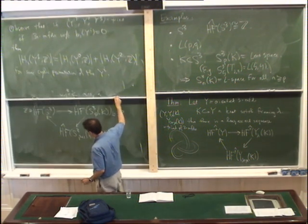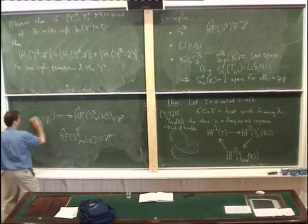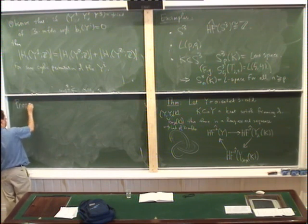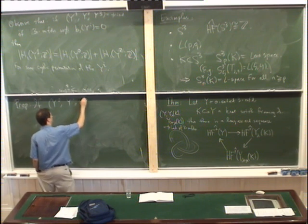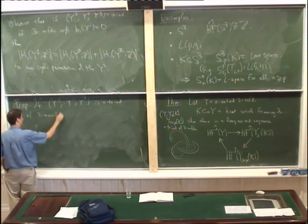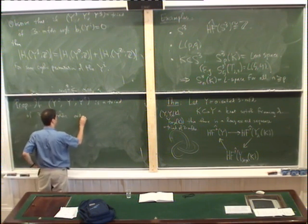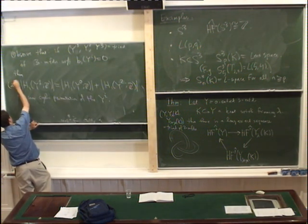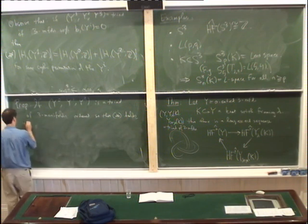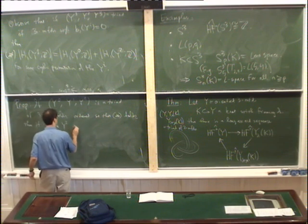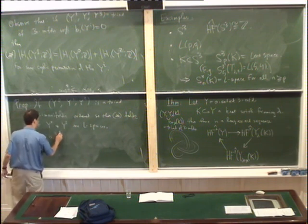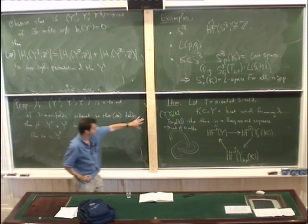To formalize: let me make the following proposition. If Y_0, Y_1, Y_2 is a triad of 3-manifolds, ordered so that the condition (*) holds, and if Y_0 and Y_1 are L-spaces, then so is Y_2. This is just linear algebra combined with the long exact sequence.